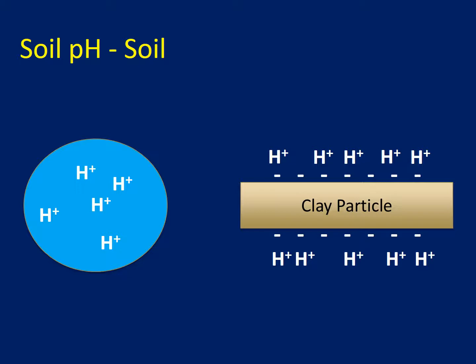When we're talking about a more complex situation like in the soil, we've got two main components: our soluble acidity, which you can see on the left-hand side, and the acidity that's bound to the soil itself, on the right-hand side. When acidity is bound to the soil, it's often bound to clay particles, which have a net negative charge and are able to attract positive hydrogen ions. In a rain or leaching event, the acidity in the soluble portion is going to be removed or leached from the soil.